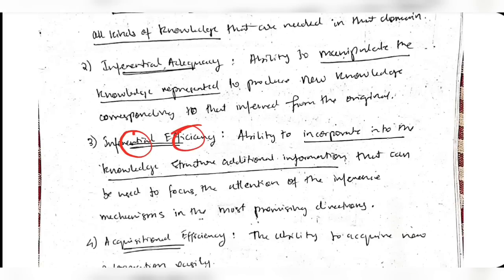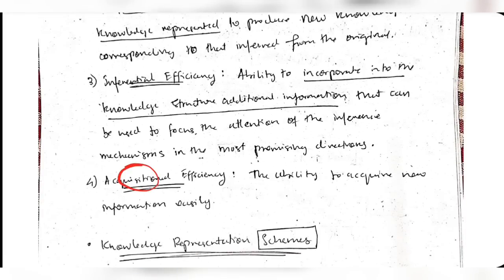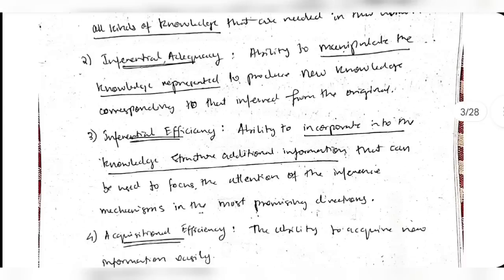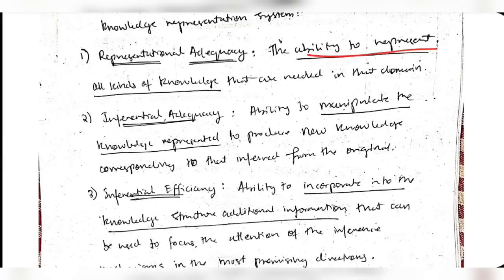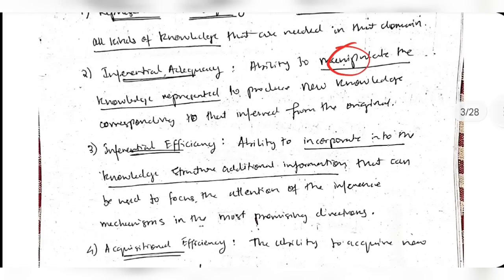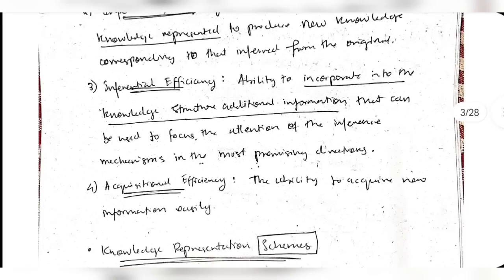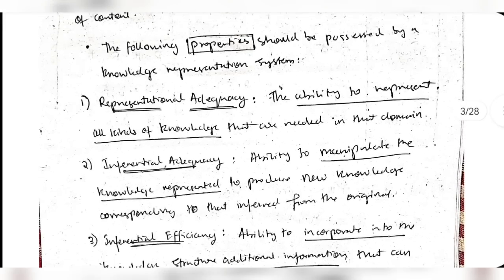The third property is inferential efficiency - the ability to incorporate new knowledge into the existing structure. The fourth is acquisitional efficiency - the ability to acquire new information easily. There is a subtle difference: 'getting' means someone gave you something, while 'acquiring' means you are working hard and achieving it yourself. These are the four properties of any knowledge representation system.